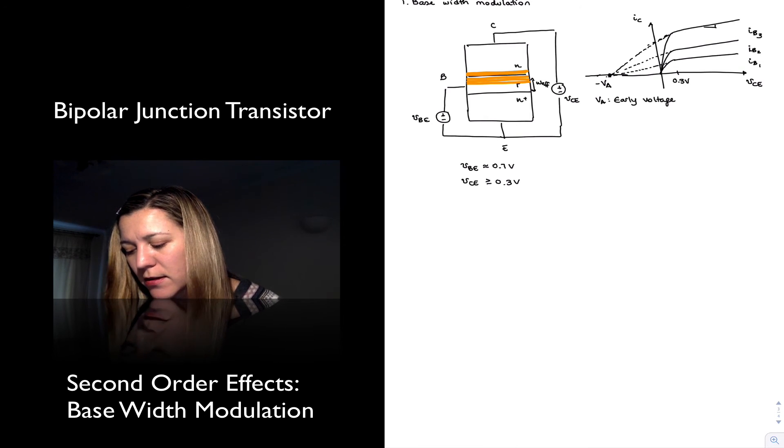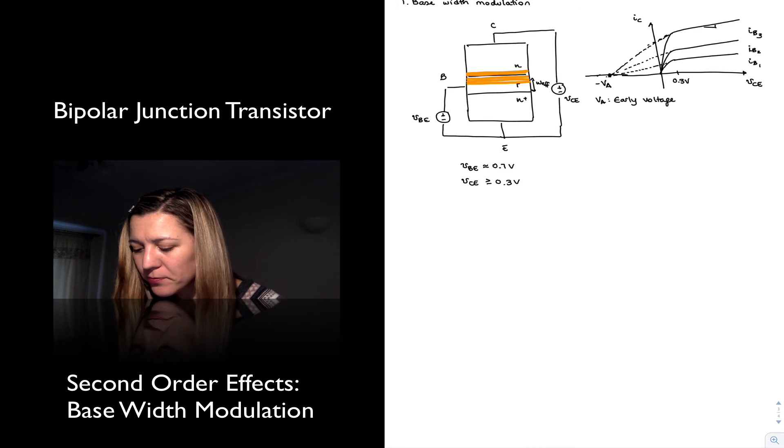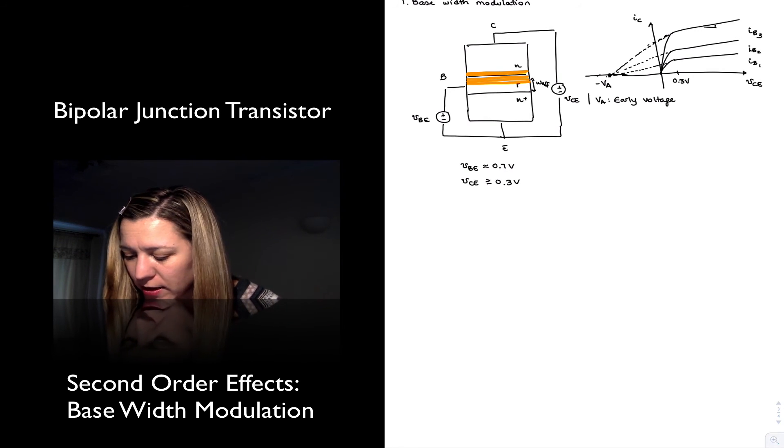Which again models the base-width modulation effect. So we could define the base-width modulation effect as the slight increase in collector current with increased values of VCE due to the change in effective width of the base, the reduction in effective width of the base. Let me highlight that. That's early voltage.